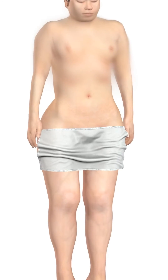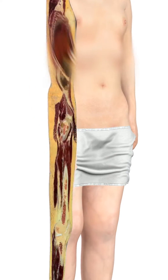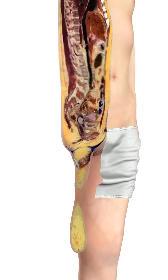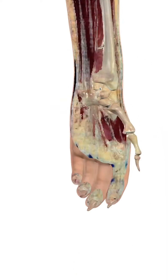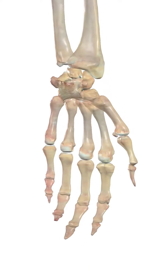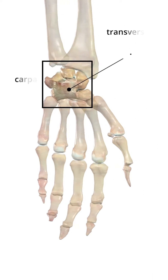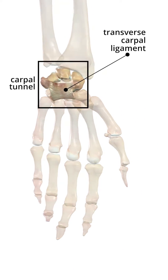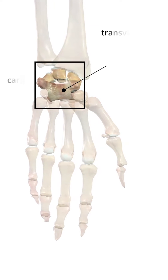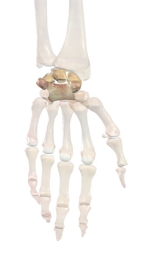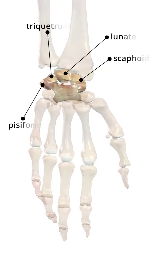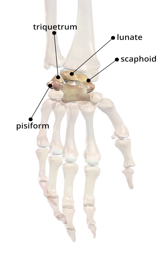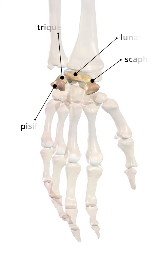The carpal tunnel is a narrow passageway located on the palmar side of the wrist. It is formed by the wrist bones and a strong fibrous ligament that runs across the wrist called the transverse carpal ligament. Bones that form the carpal tunnel include the scaphoid, lunate, triquetrum, and pisiform.